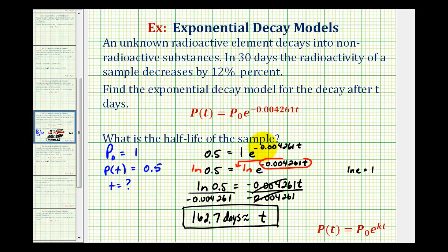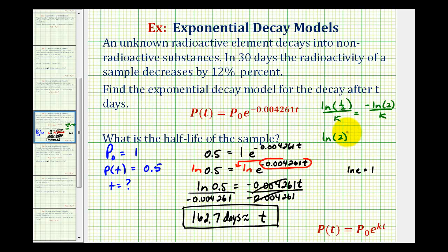There is a shortcut formula for half-life: you can calculate it as ln(0.5) / k, which can also be expressed as -ln(2) / k. This works because ln(0.5) = ln(2^(-1)) = -ln(2) by the power property. However, I don't really like to use this shortcut formula because you can easily solve this problem without memorizing another formula, and doing it step by step you understand what's actually happening.